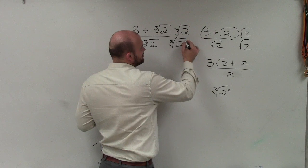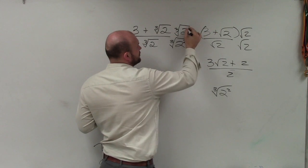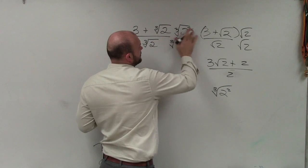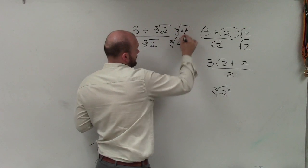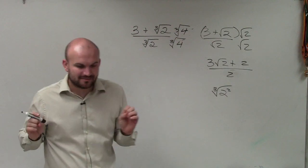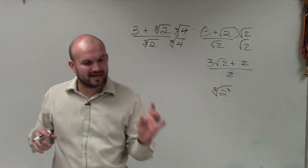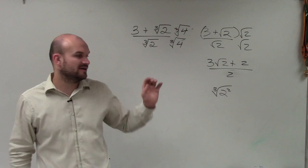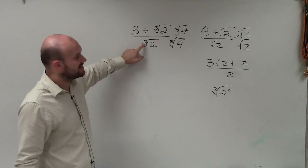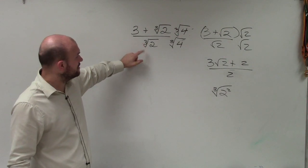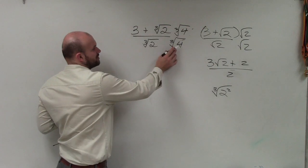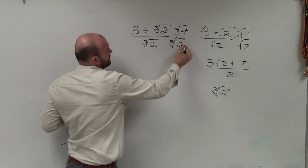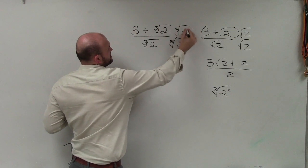So to do this, what I need to do is multiply by the cube root of 2 squared, or really just the cube root of 4. It's important when we take our radicand, we raise it to a power that when multiplied by itself is going to give us the same as what we're taking the root of. So now I multiply by the cube root of 4, or 2 squared.